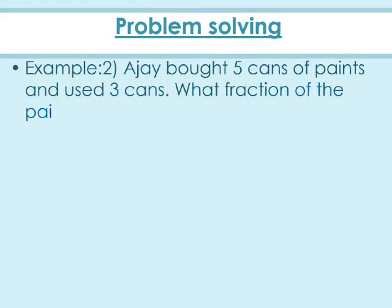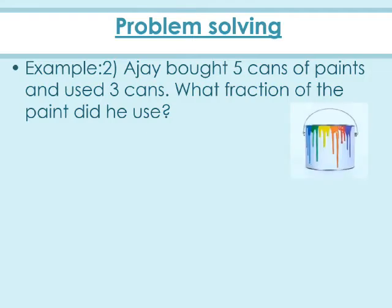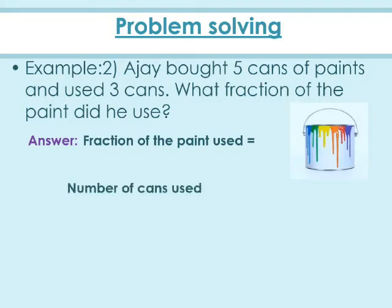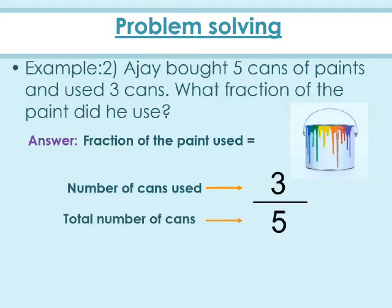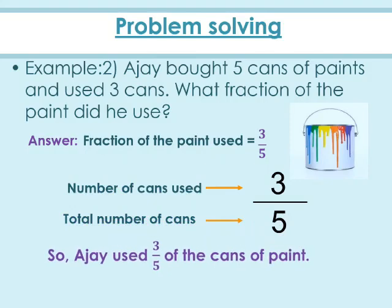Example 2: Ajay bought 5 cans of paint and used 3 cans. What fraction of the paint did he use? Total number of cans Ajay bought equals 5, and out of 5 he used 3 cans. So the fraction of paint used is number of cans used by total cans, that is 3 by 5. Ajay used 3 fifths of the cans of paint.